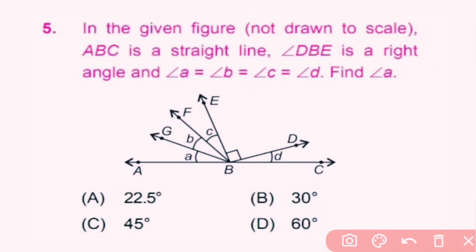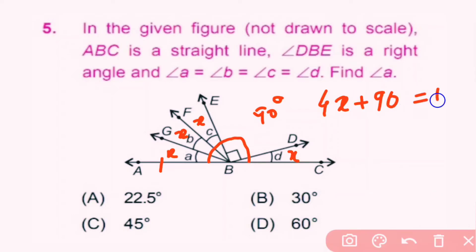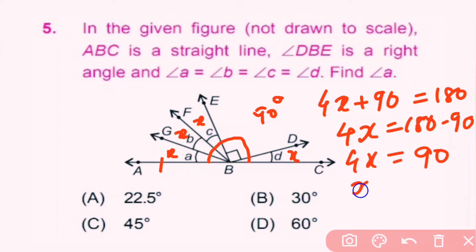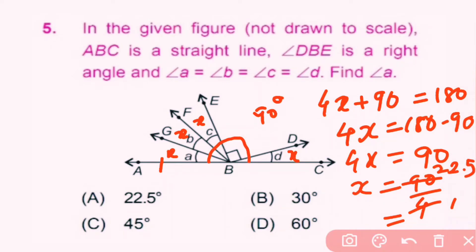Question number 5: In the given figure, ABC is a straight line, angle DBE is a right angle, and angle A equals angle B equals angle C equals angle D. Find angle A. Since BCE is a straight line and the right angle is 90 degrees, we let angle A equal x, so all four equal angles are x. Then x plus x plus x plus x plus 90 equals 180, so 4x plus 90 equals 180.